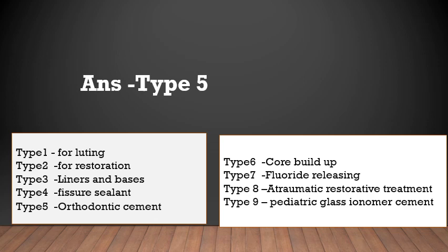According to clinical uses, glass ionomer cements are classified into 9 types. Type 5 is used for orthodontic cement. Type 7 is for fluoride release, Type 8 for atraumatic restorative treatment, and Type 9 for pediatric glass ionomer cement.